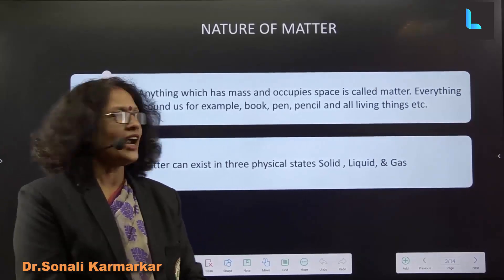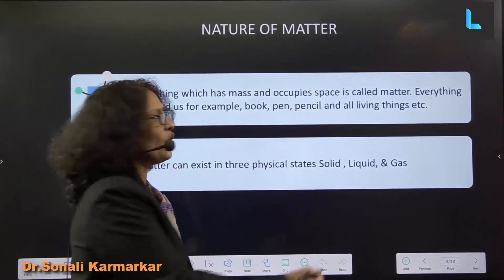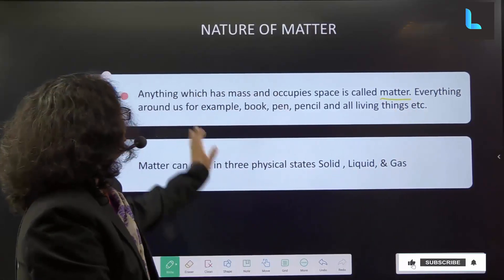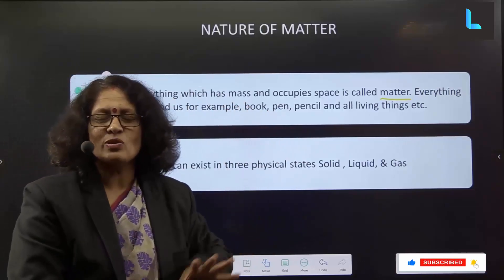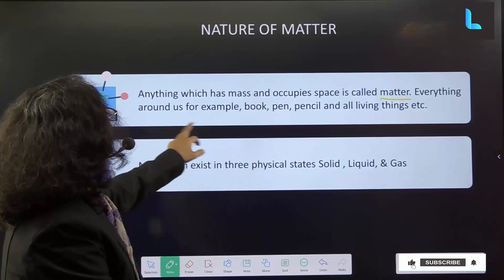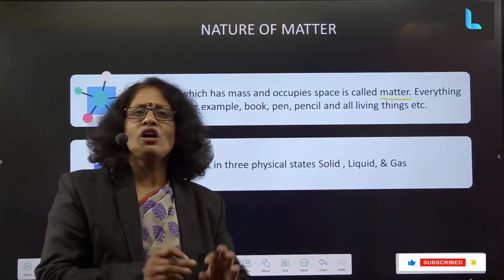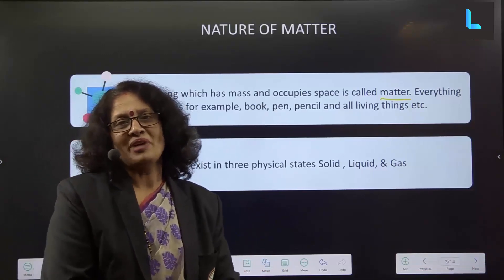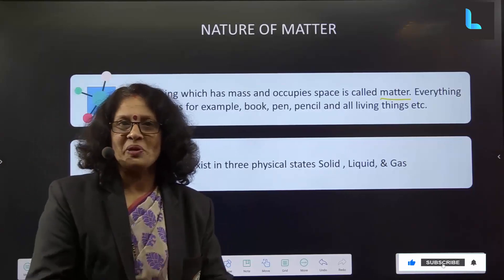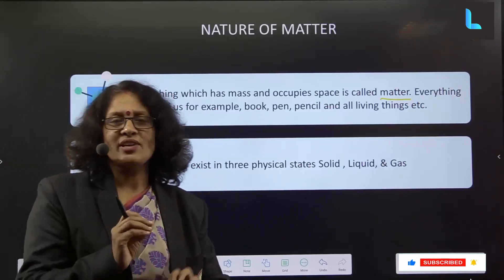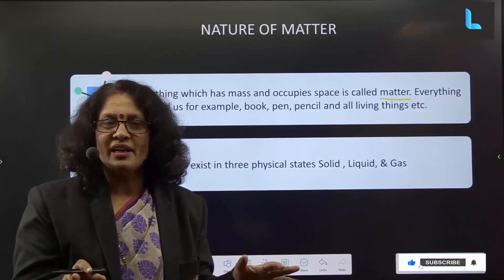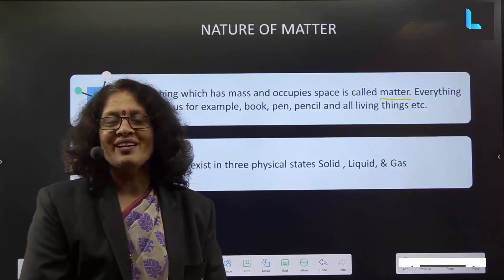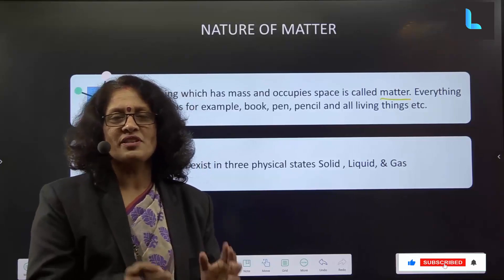Anything which has mass and occupies space is called matter. This you have studied at the school level. It can be books, pen, pencil, all living things or non-living things — it comes under matter. Matter requires space and matter will have mass. Either it can be very small or very big; it is not proportional to the size or how much space it is occupying. If it occupies space and has mass, it is called matter.